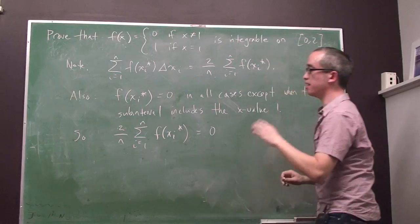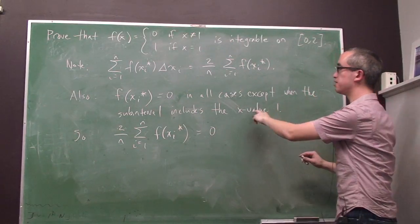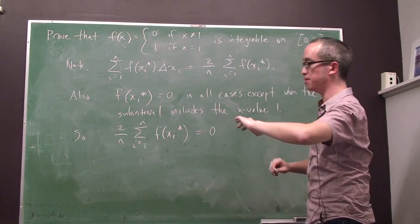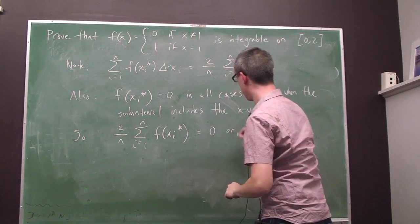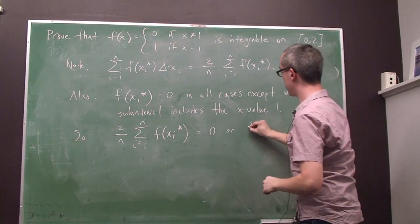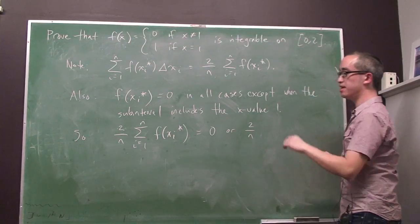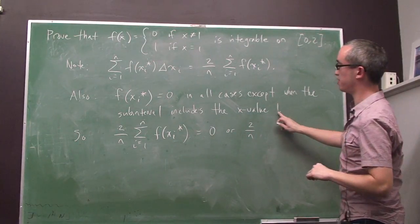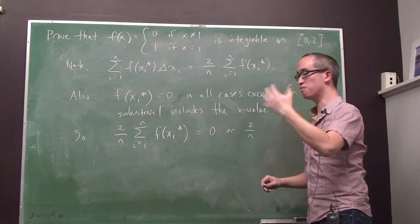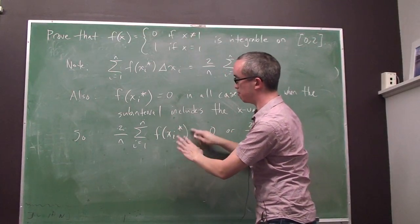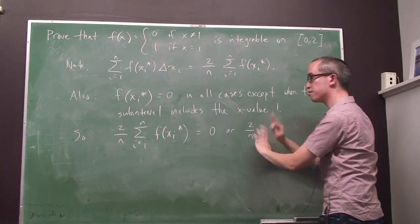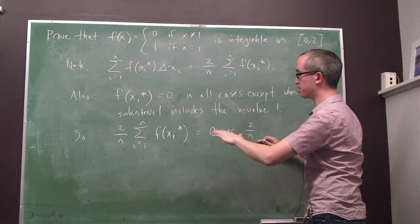It might be equal to 0 if, in the subintervals including the x value 1, we pick a sample point that's not 1. Or, it might be equal to 2 over n. If, in a subinterval including the x value 1, we pick the sample point 1, and so we get one positive term here, which gives us a total contribution of 2 over n. All of the other contributions are 0.